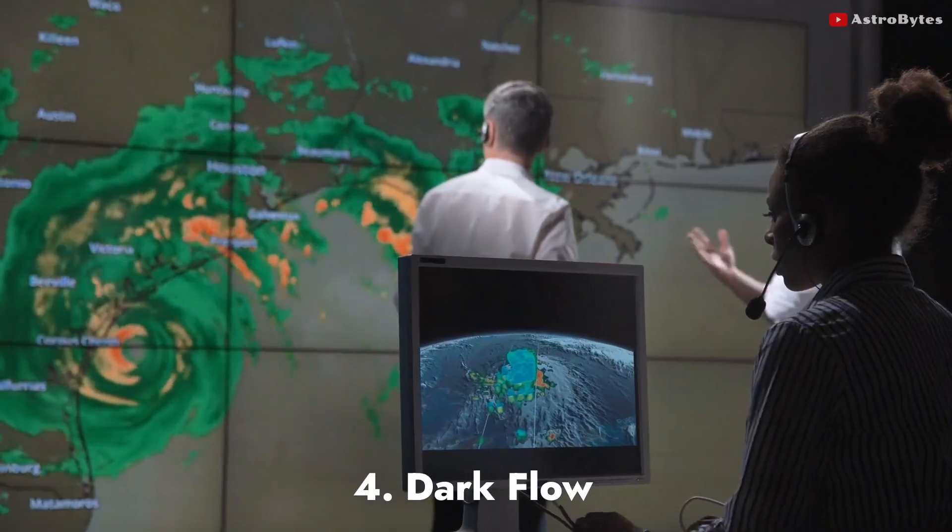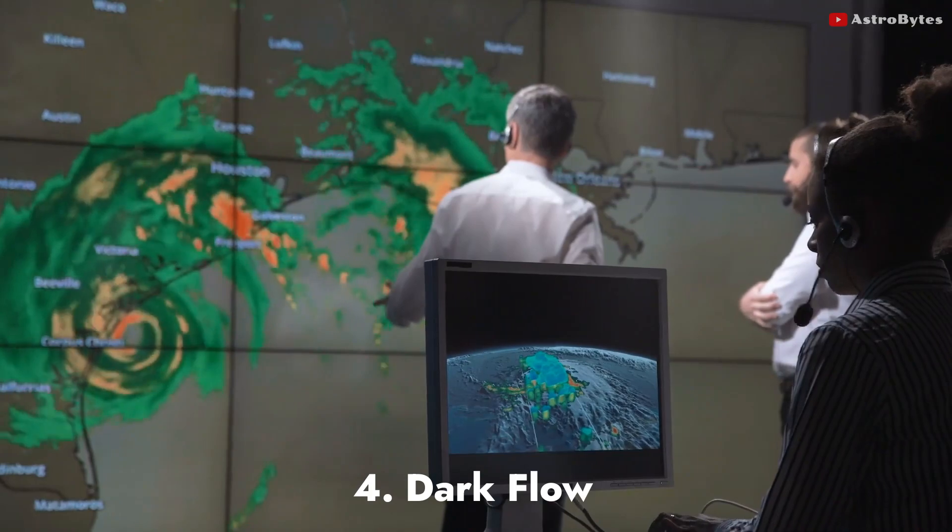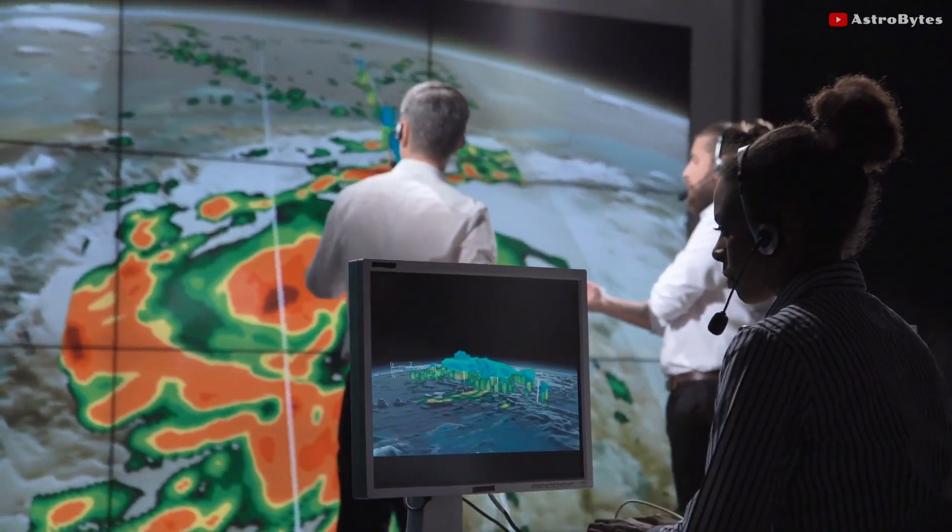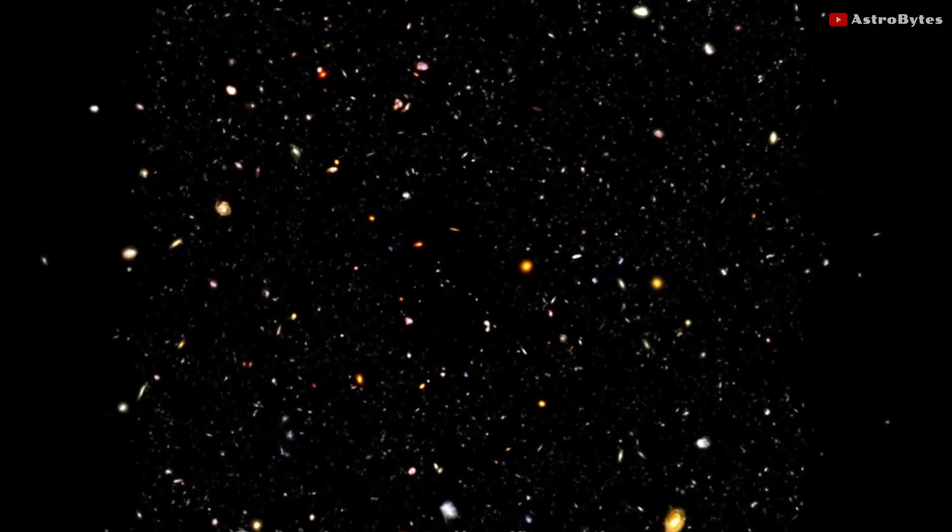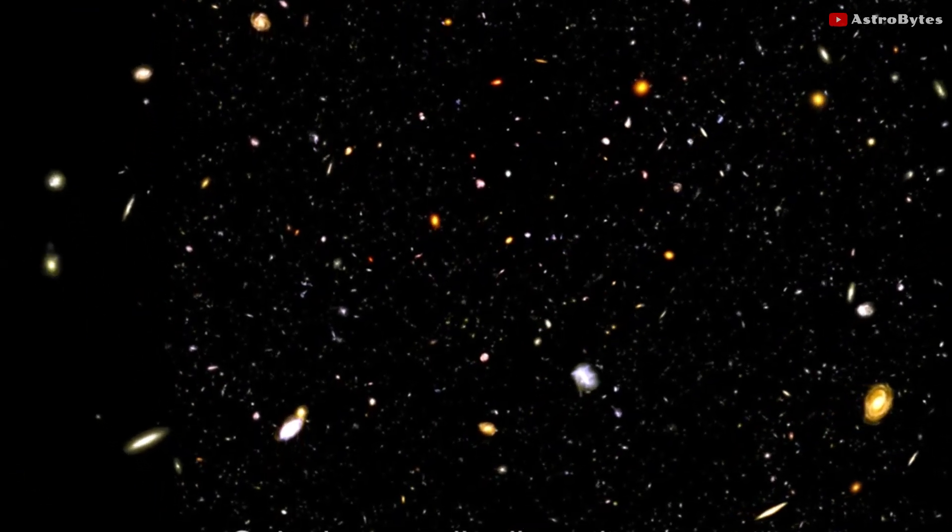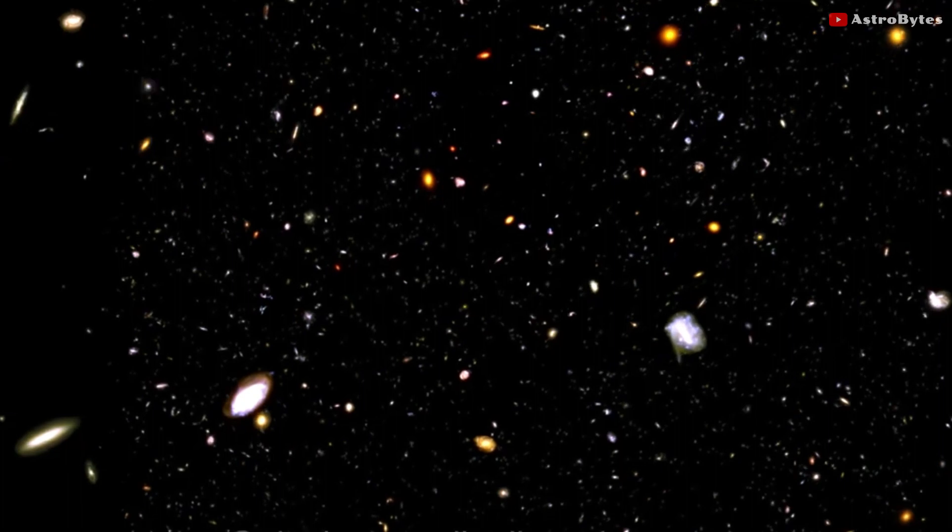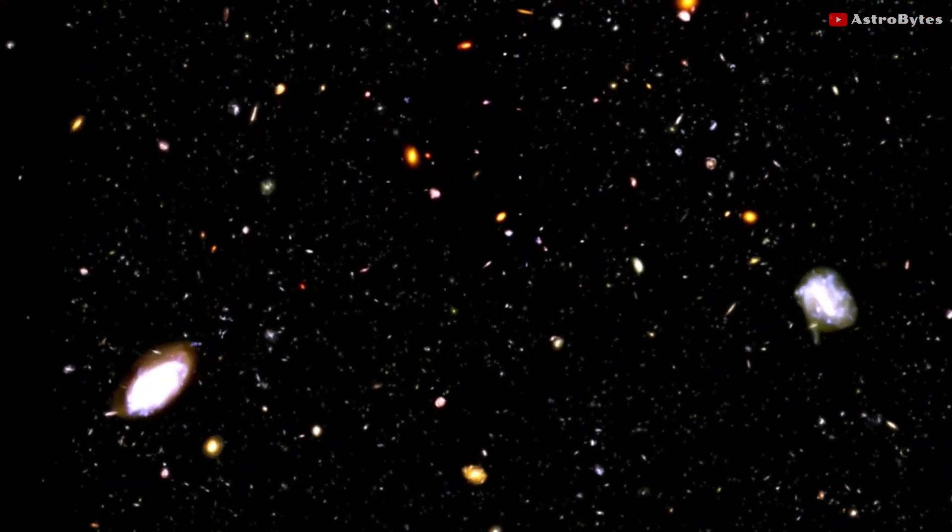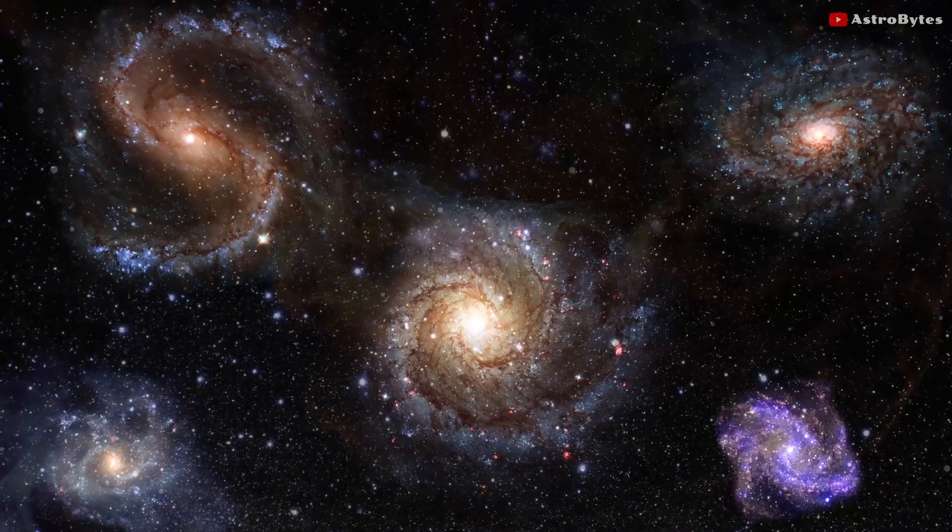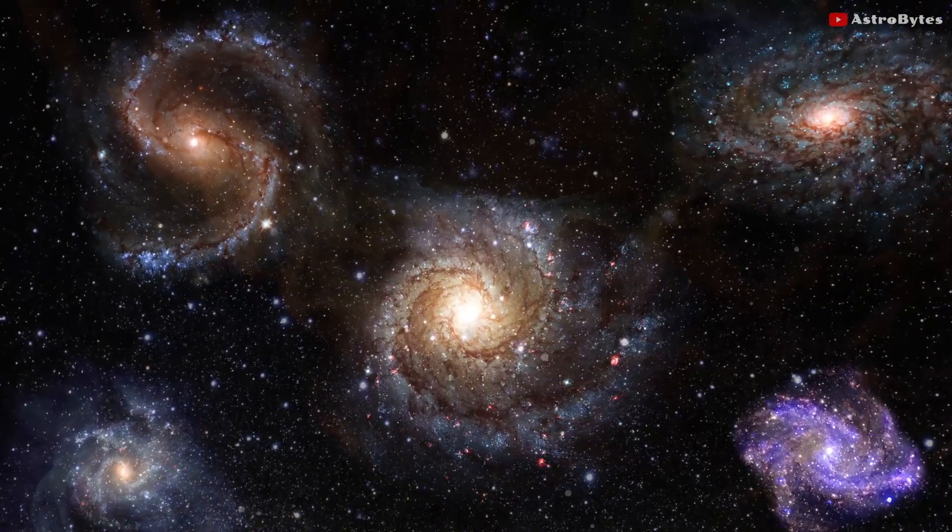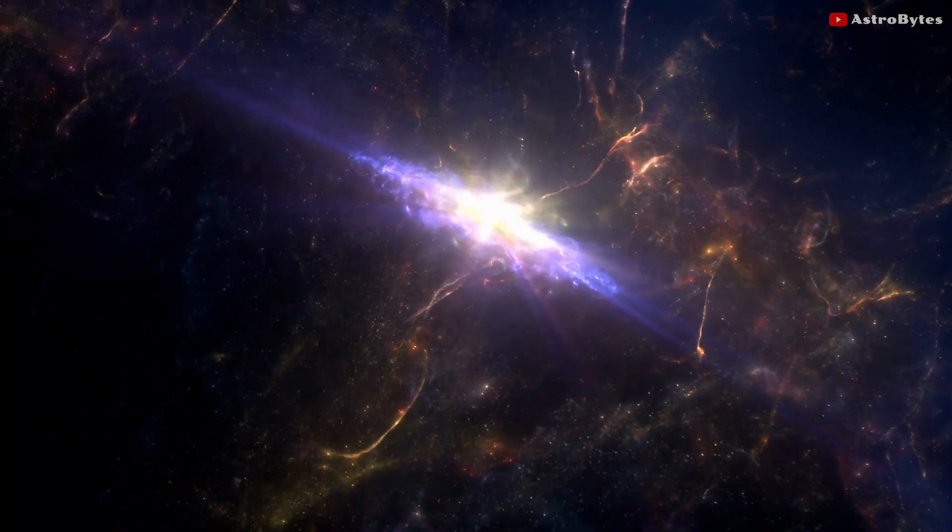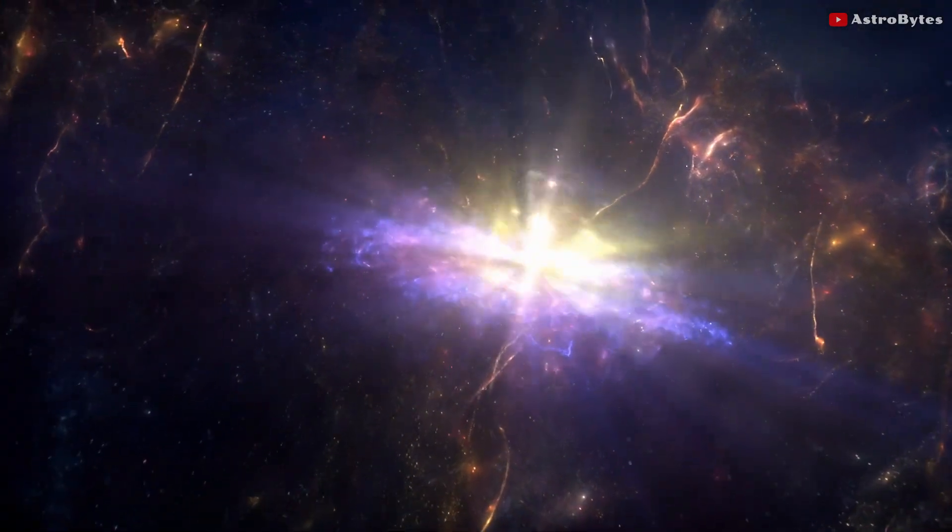Number four: Dark Flow. In 2008, astronomers discovered something very strange and unexpected. Galactic clusters were all streaming in the same direction at an immense speed of over 2 million miles per hour. New observations in 2010 confirmed this phenomenon as dark flow. The movement defies all predictions about the distribution of mass throughout the universe after the Big Bang. One possible cause might be the massive structures outside the Hubble volume exerting gravitational influence.